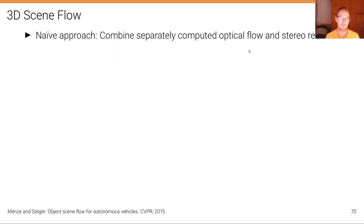The naive approach for computing scene flow is to combine separately computed optical flow and stereo results. But that's suboptimal because, for example, the optical flow estimate cannot exploit that we know something about the structure from the stereo measurements.